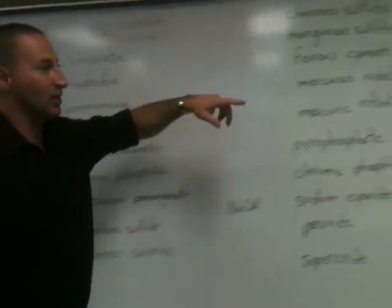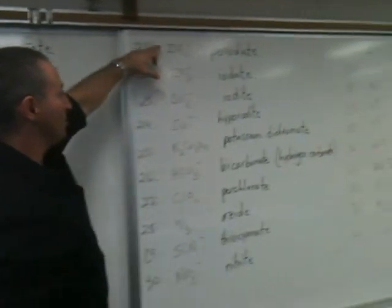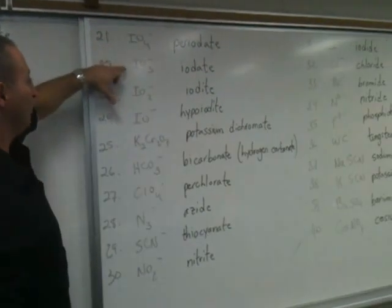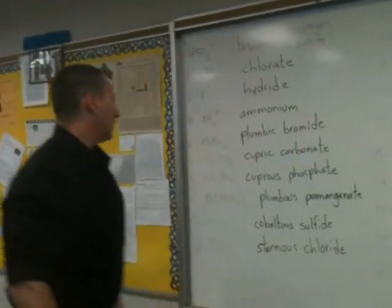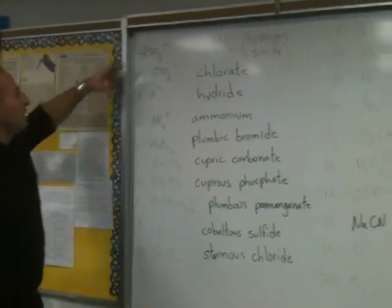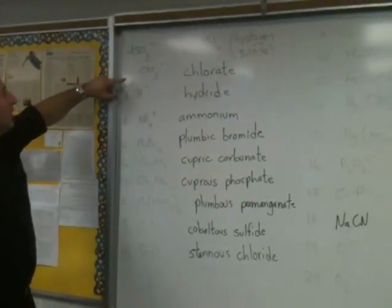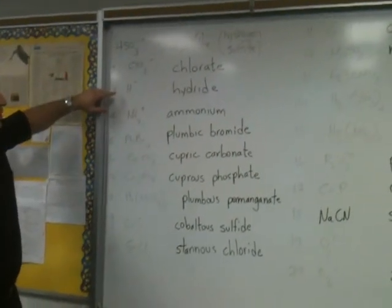Like we see here in the iodate series: periodate, iodate, hypoiodate. We'll come back to that later. So anyway, let's go through this systematically. We have bisulfite, chlorate, hydride.